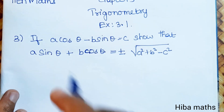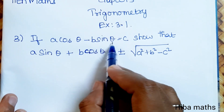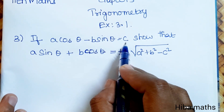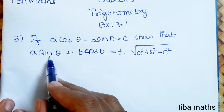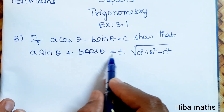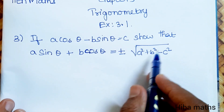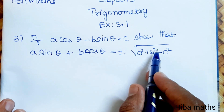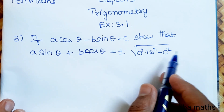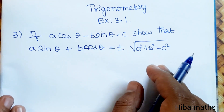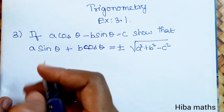If a cos theta minus b sin theta is equal to c, show that a sin theta plus b cos theta is equal to plus or minus root of a squared plus b squared minus c squared. We will prove this.